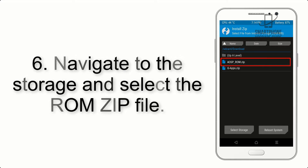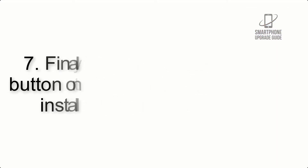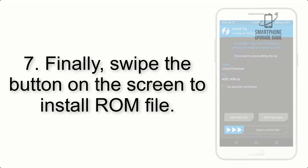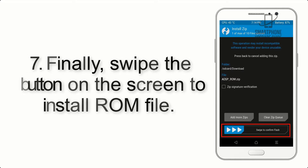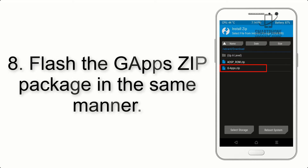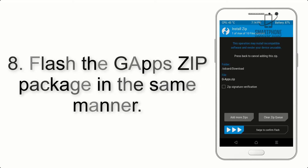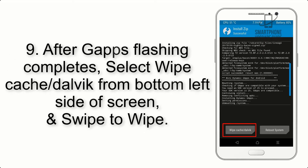Step 5: Go back to the recovery main screen and tap on the Install button. Step 6: Navigate to the storage and select the ROM zip file. Step 7: Finally, swipe the button on the screen to install the ROM file.